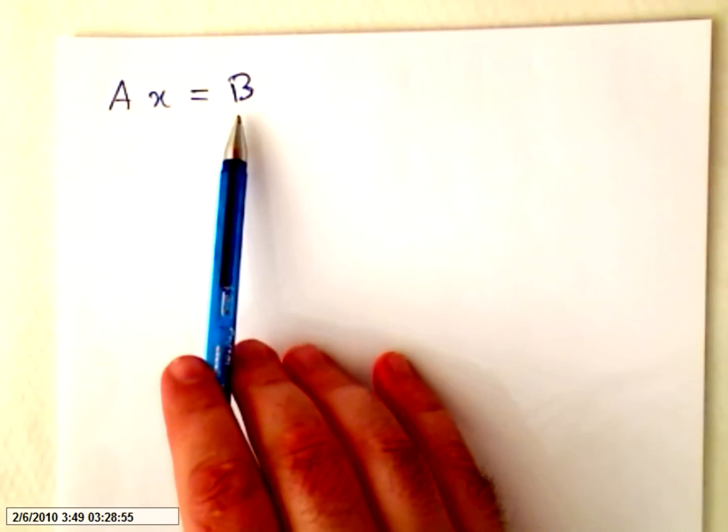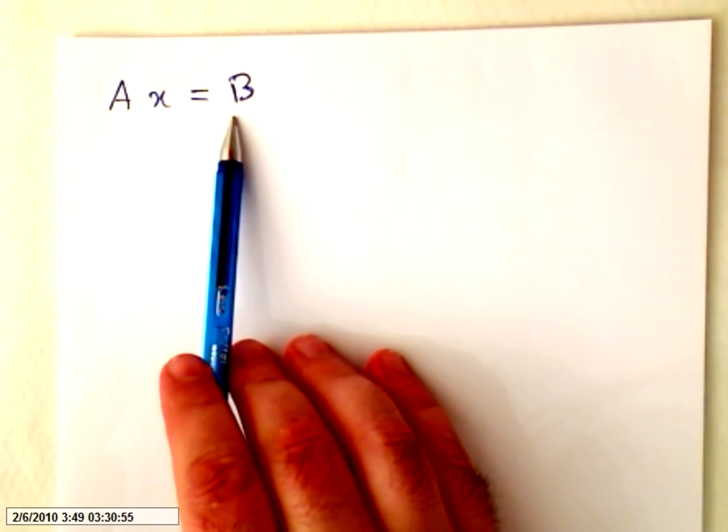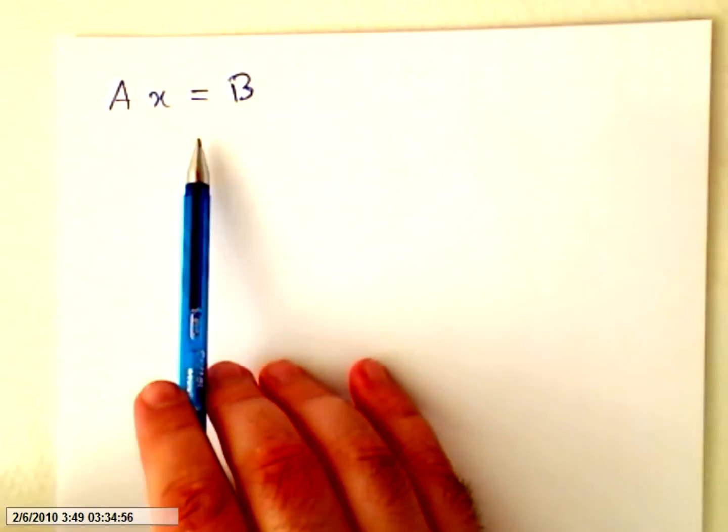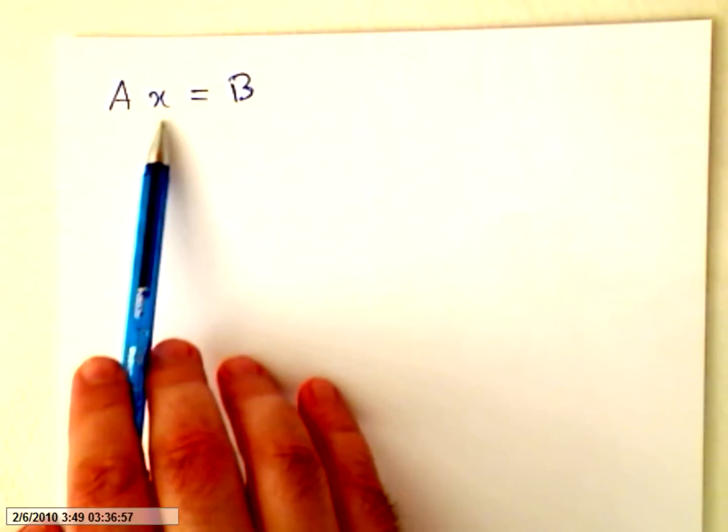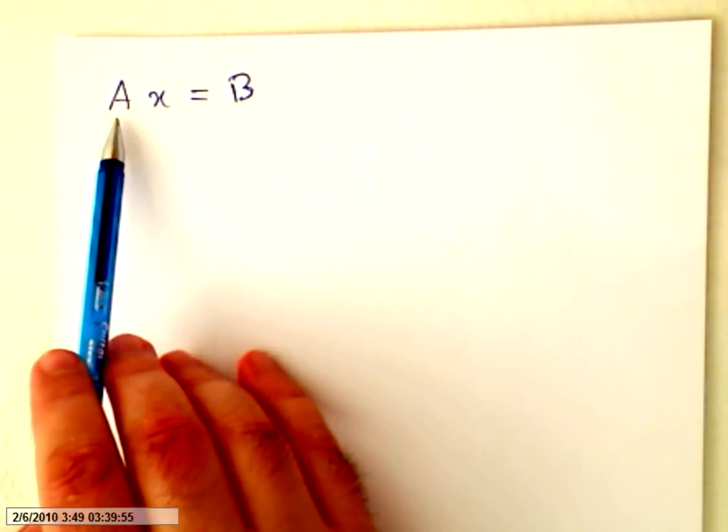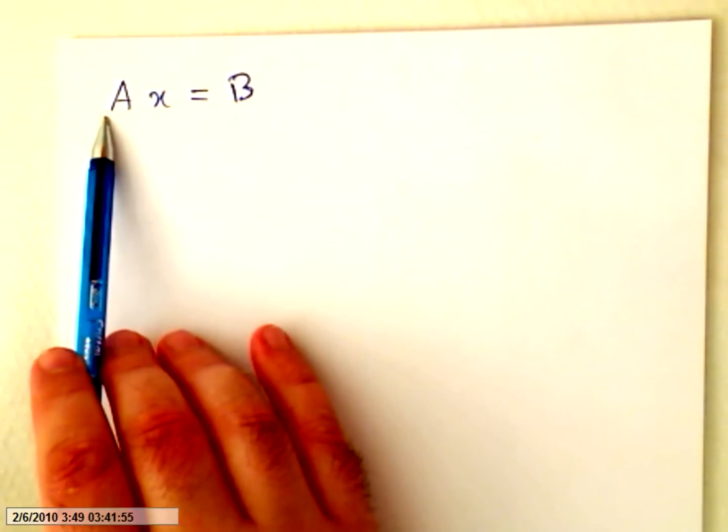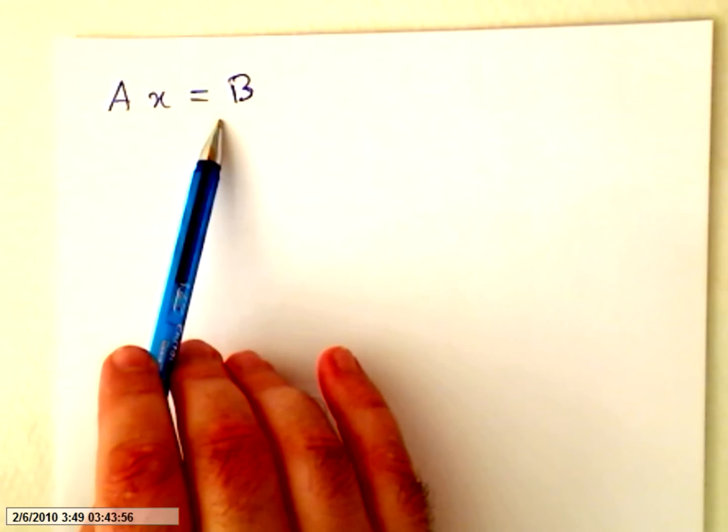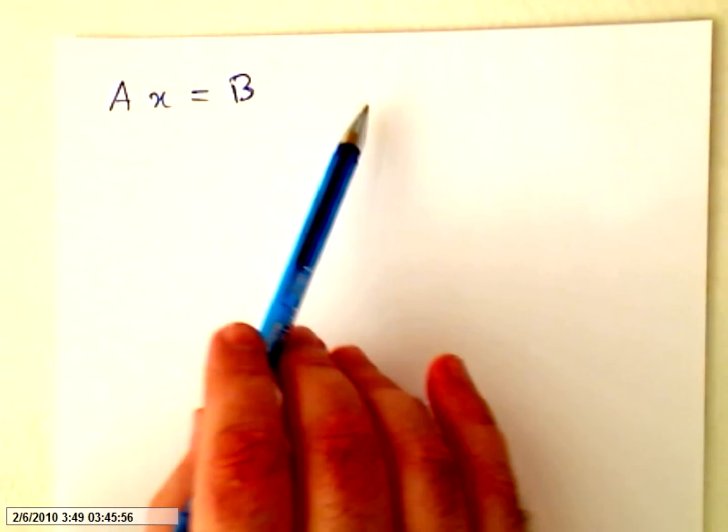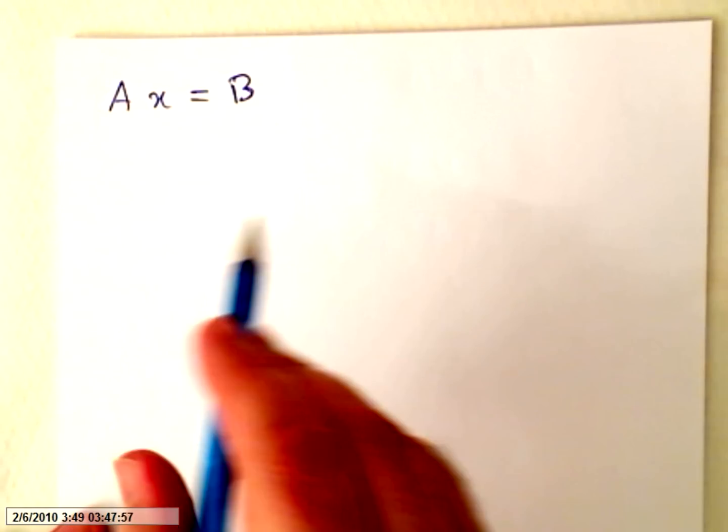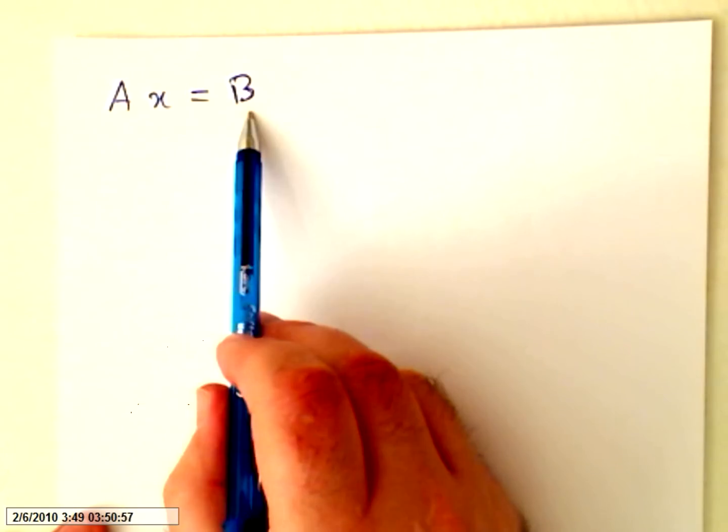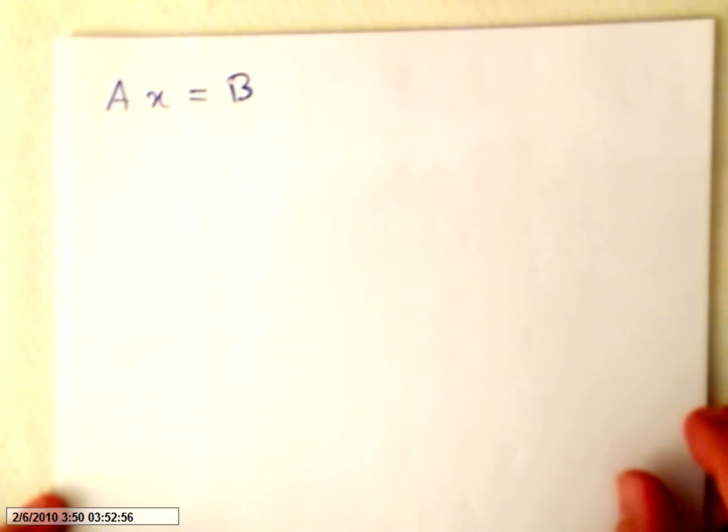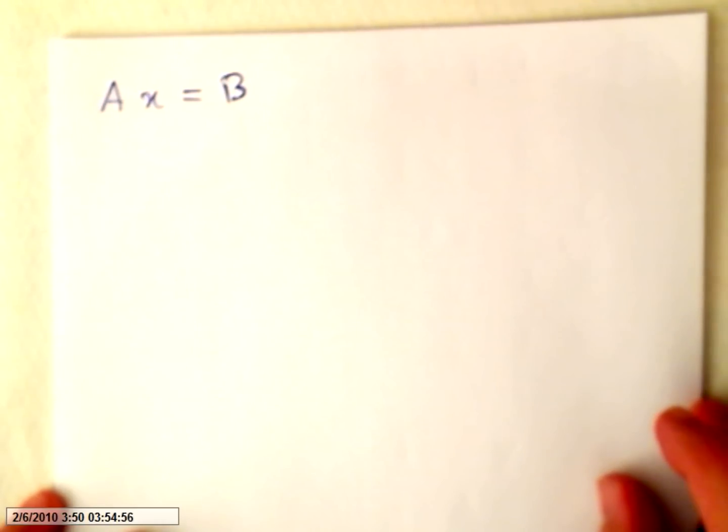Well, with this system, the easiest way, or one of the ways, there are many ways to do this, but we are used for instance to finding inverses. We multiply, we left multiply by the inverse here, left multiply by the inverse here, so X will be inverse times B, inverse of A times B. But here we are going to use a totally different system. First,